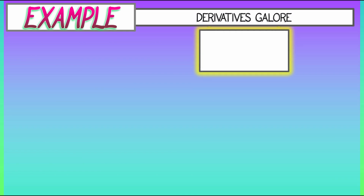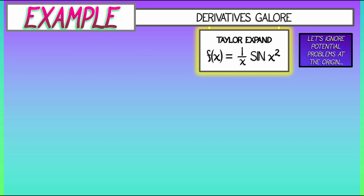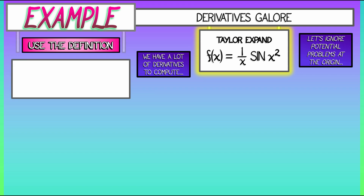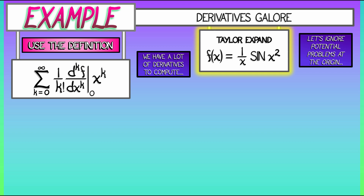Taylor expand the function f(x) = (1/x) · sin(x²). Now let's ignore the problems that we might have evaluating this at zero — was that L'Hôpital's rule? But let's just compute some derivatives. Use the definition of Taylor expansion: the sum, k goes from zero to infinity, of (1/k!) times the k-th derivative of f evaluated at zero, times x to the k.